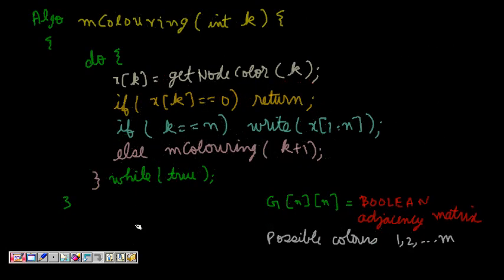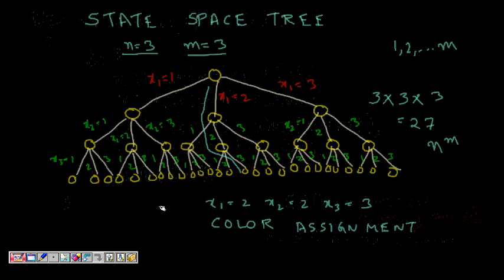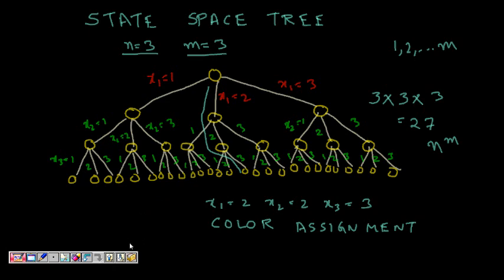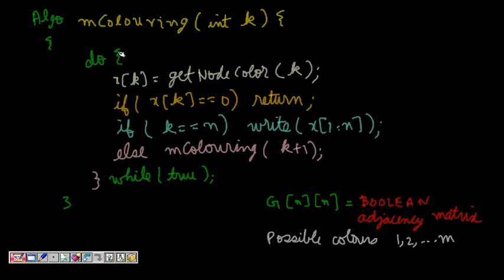We will use backtracking, where we search the same state space and try to color the graph. We define a function m_coloring which takes an integer k indicating which node we are coloring at this level. We are given an adjacency matrix G where G[i][j] = 0 if node i is not connected to j, and 1 if they are connected. We have m possible colors from 1 to m.